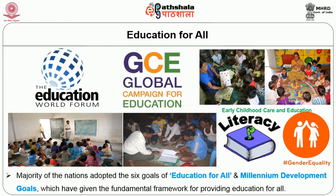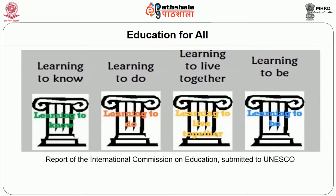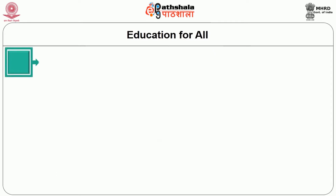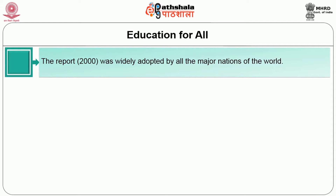A majority of nations adopted the six goals of Education for All and Millennium Development Goals, which have given the fundamental framework for providing education for all. The report of the International Commission on Education submitted to UNESCO had an integrative approach to education based on four major premises: learning to know, learning to do, learning to be, and learning to live together. The educational prerequisites of UNESCO are formed by these premises, and this report was widely adopted by all the major nations of the world.